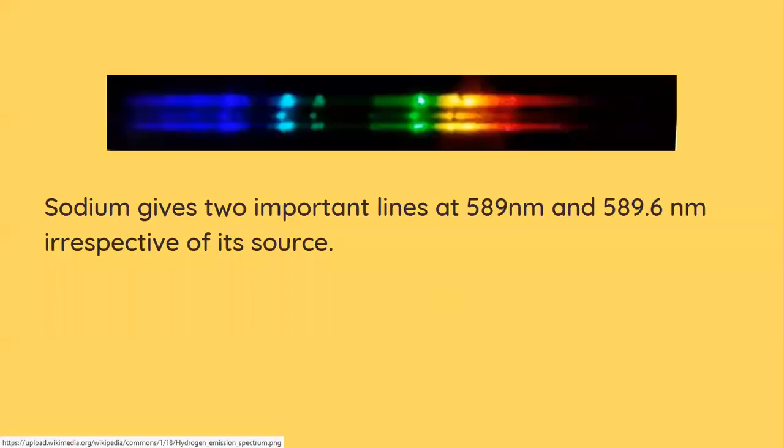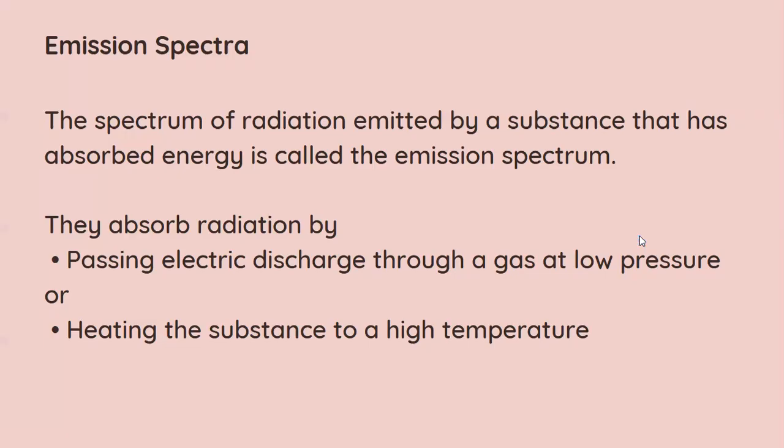This is the emission spectra of sodium which gives two important lines at 589 nanometers and 589.6 nanometers. When a particular atom is getting hit by the radiation it will absorb a certain amount of energy and it will emit it out because the absorption state is the excited state and it is unstable.